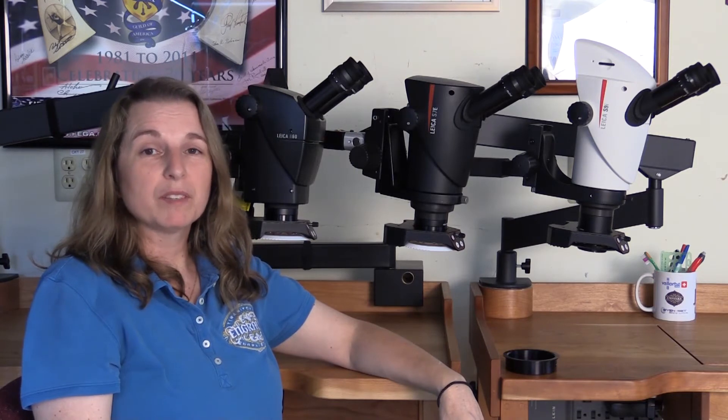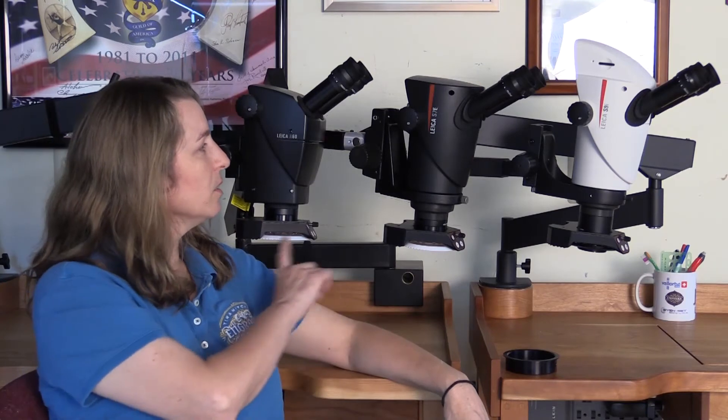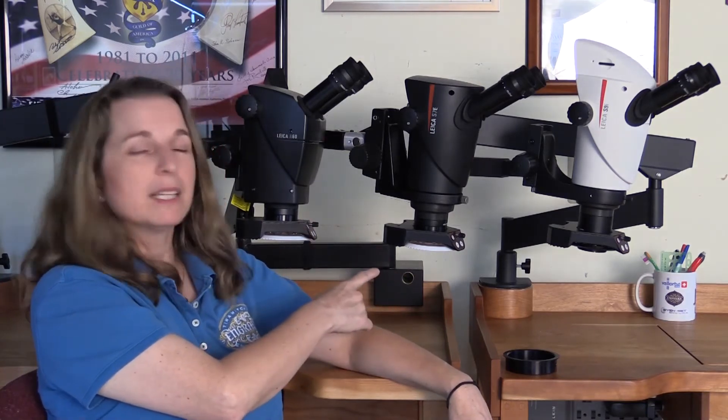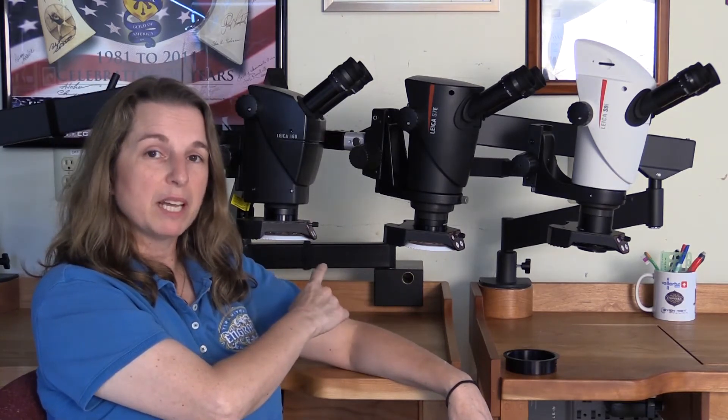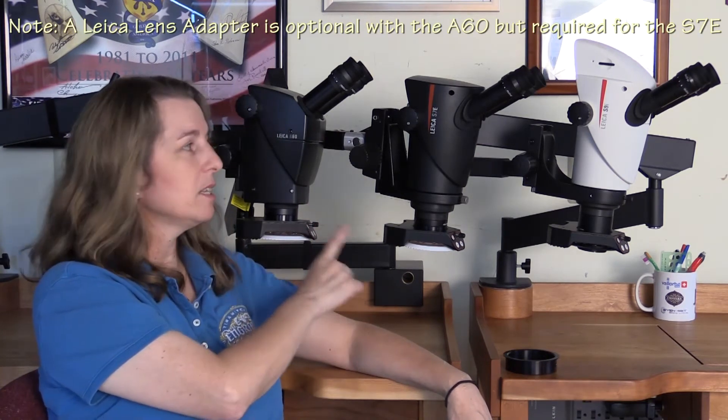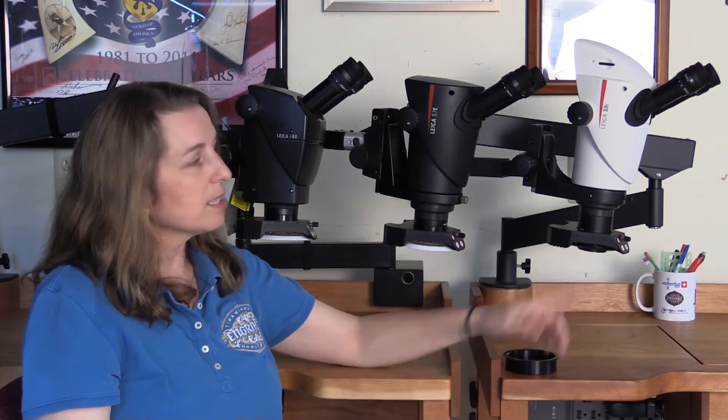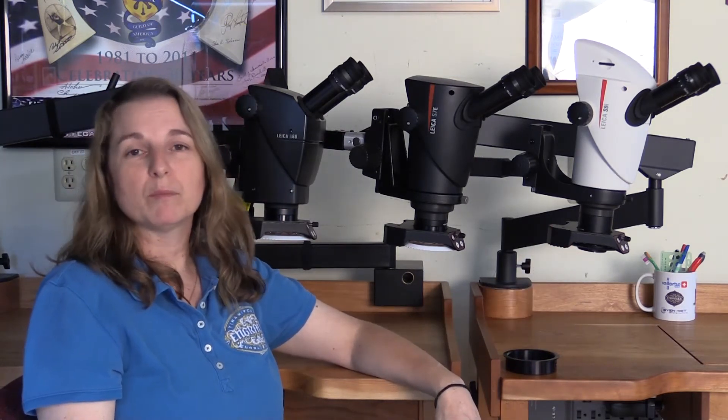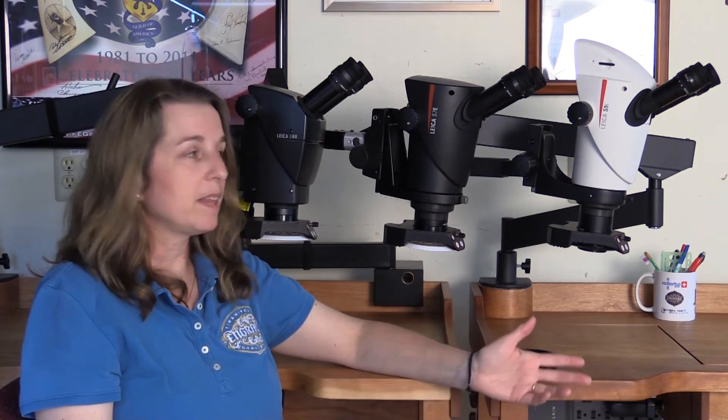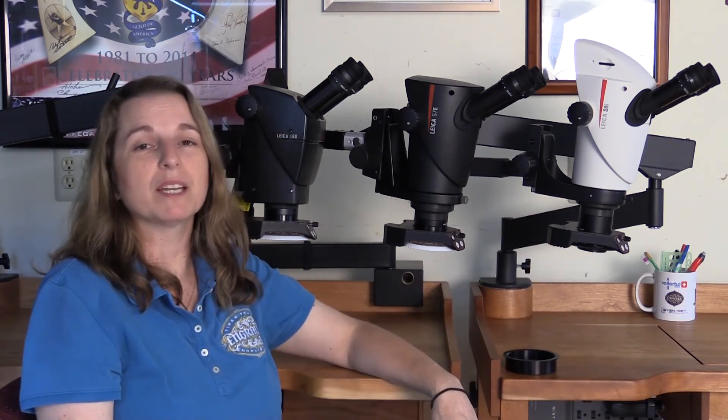The objective lenses for all three scopes are a bit different as well. These two, the A60 and the S7, have the same lenses. So if you have lenses for the A60, they would fit on the S7. The S9 has its own series of objective lenses, and that has to do, again, with the different type of glass that's used in the making of that microscope.